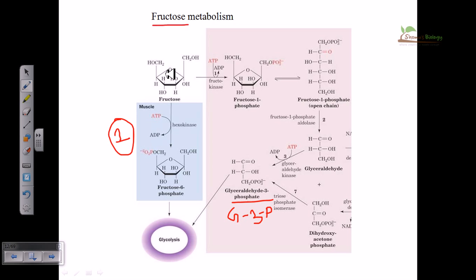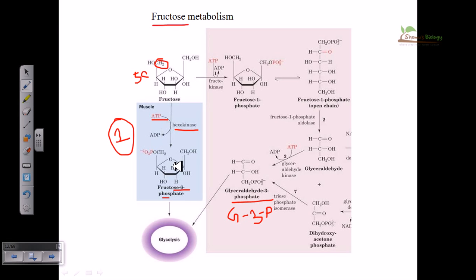Let us first talk about the simpler pathway. We are having fructose, which is a five-carbon ring. Fructose is converted into fructose-6-phosphate by adding one phosphate group to the sixth carbon position. The source of phosphate is ATP. The enzyme hexokinase snaps off one phosphate from ATP and attaches it to the sixth carbon position of fructose, producing fructose-6-phosphate. Fructose-6-phosphate is a very stable intermediate of glycolysis and can further be converted through future steps to finally generate pyruvic acid.